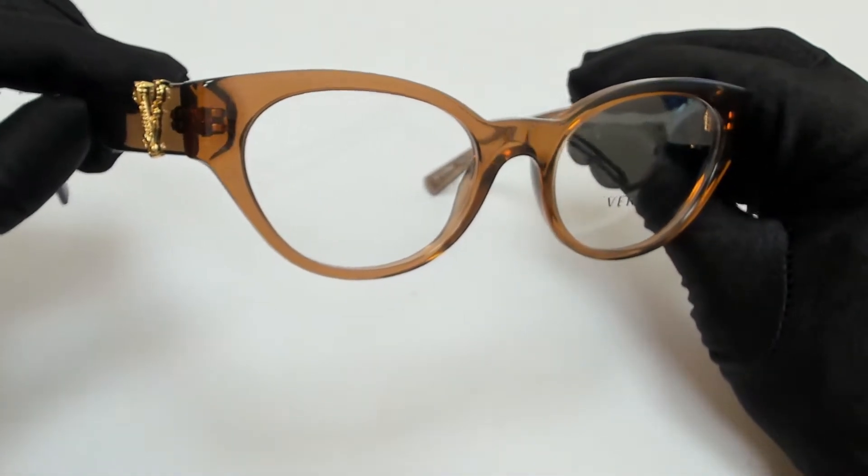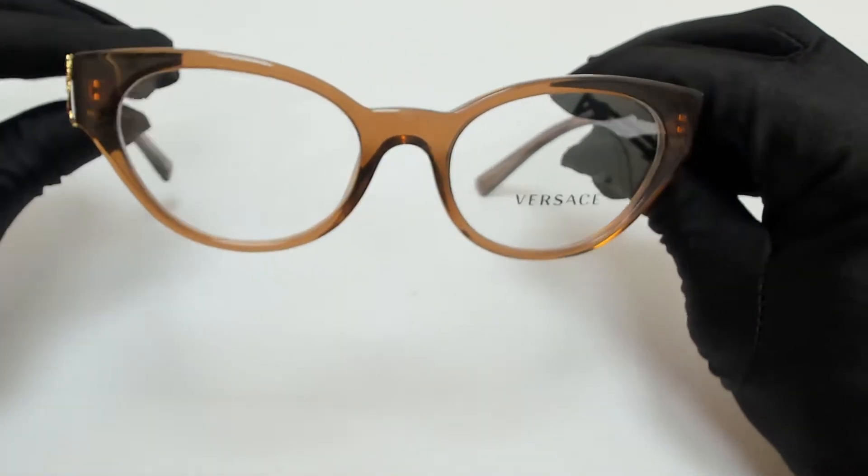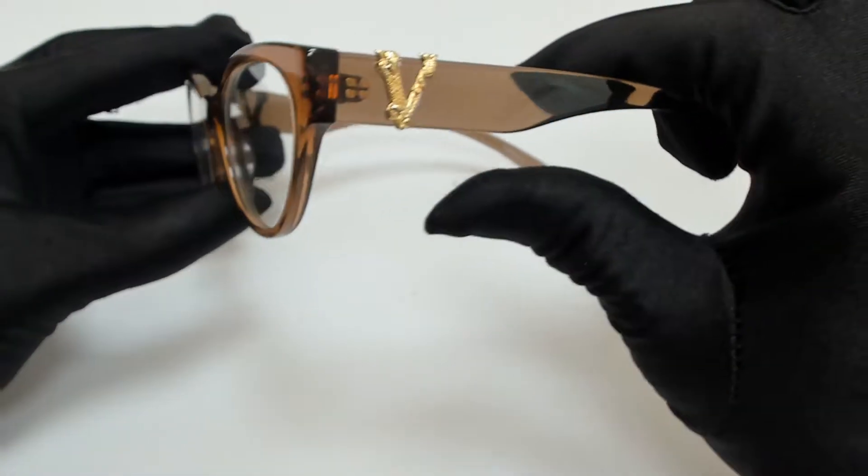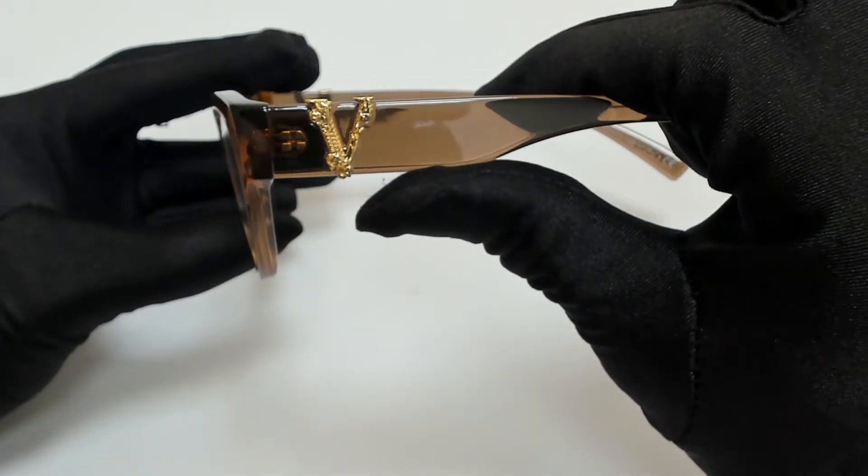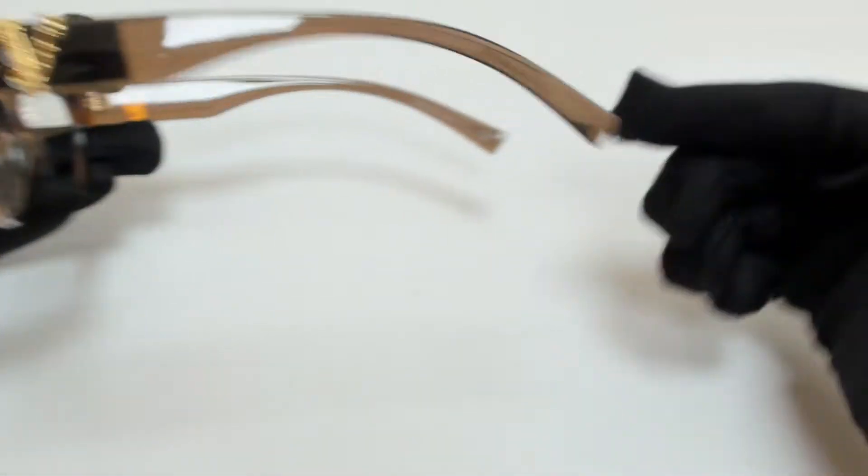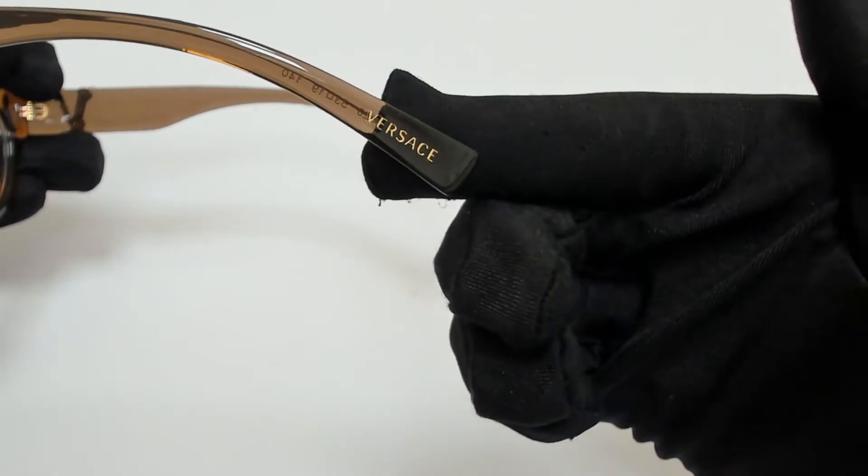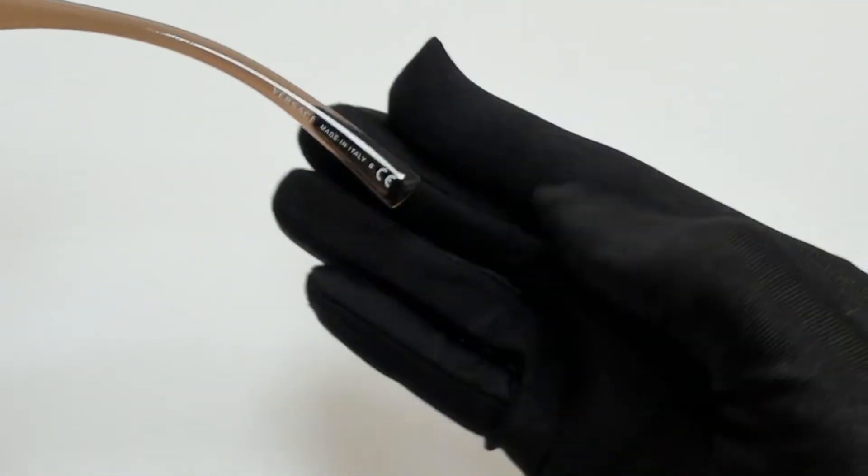The color of the frame is transparent brown, and it has a cat eye shape. On its temples, you'll find the Versace logo in gold, and they can also be found on its temple tips. And it's made in Italy.